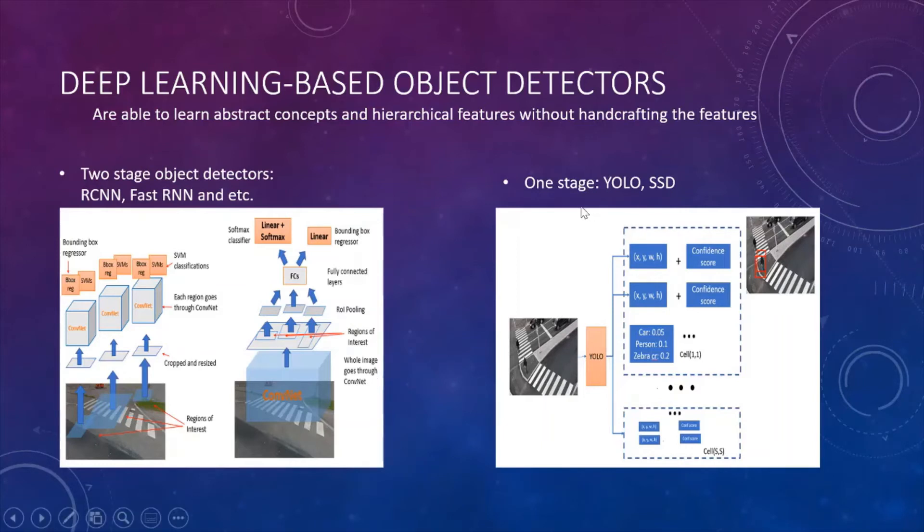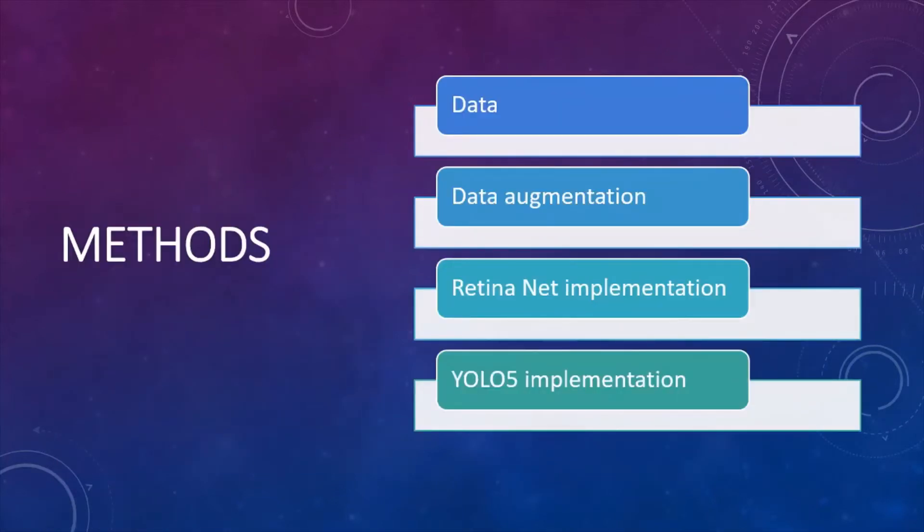Usually, two-stage object detectors are robust and they give more accuracy. One-stage object detectors were motivated by their speed. That's why they lose some points in accuracy, but they are very crucial, for example, for real-time object detection. Next, I will talk about the experimental part. And first, I will talk about applied data augmentation and then about RetinaNet and YOLO-5 implementation.